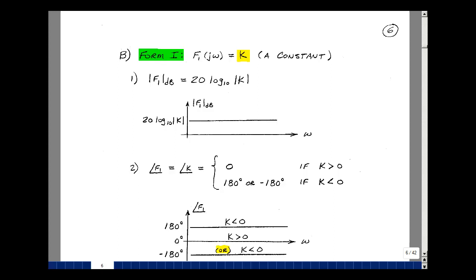First one I'll call Form 1, F1 of jω, and that would be the simplest possible case, just a constant. The magnitude is 20 log of the magnitude of that number, and we sketch that versus frequency, but it's not going to change with frequency, just a constant.